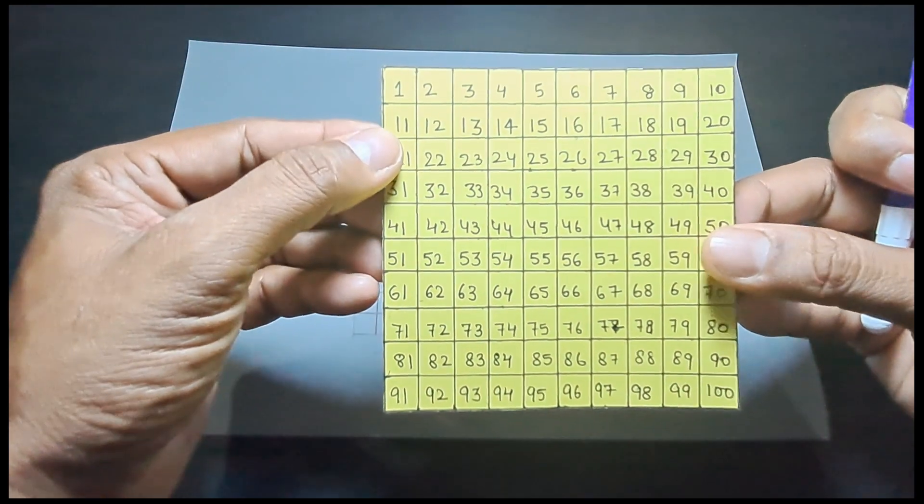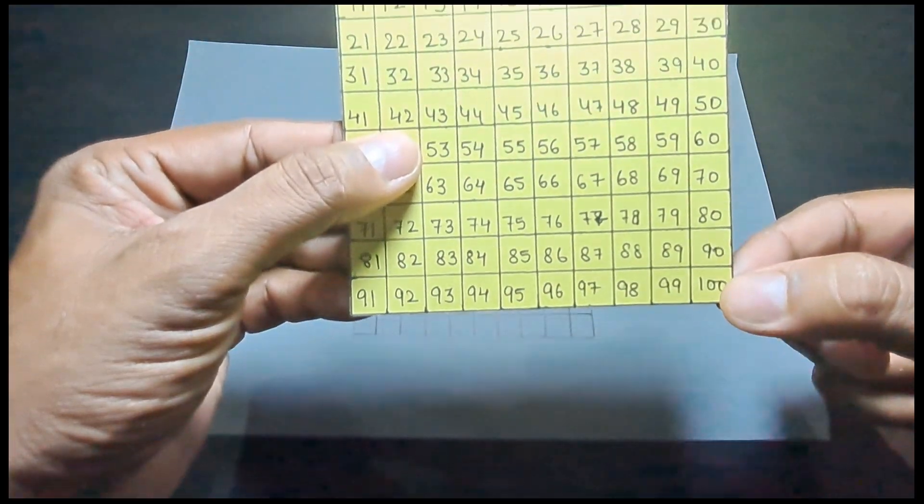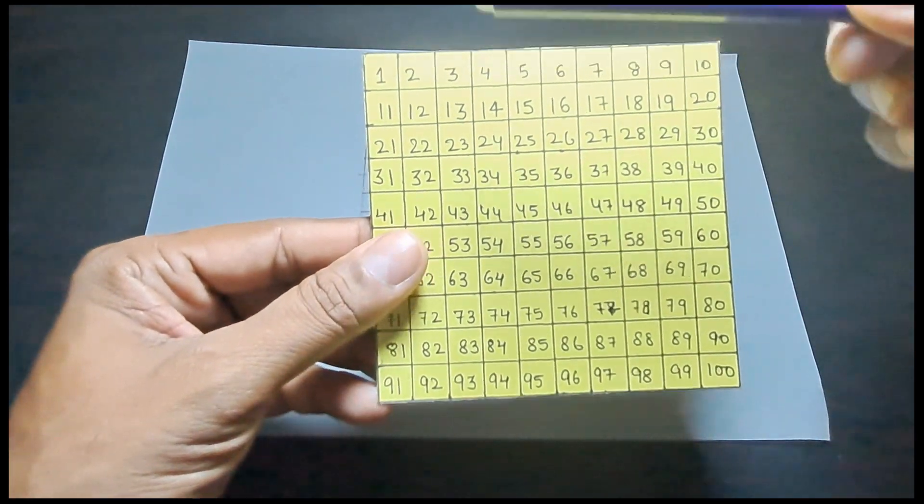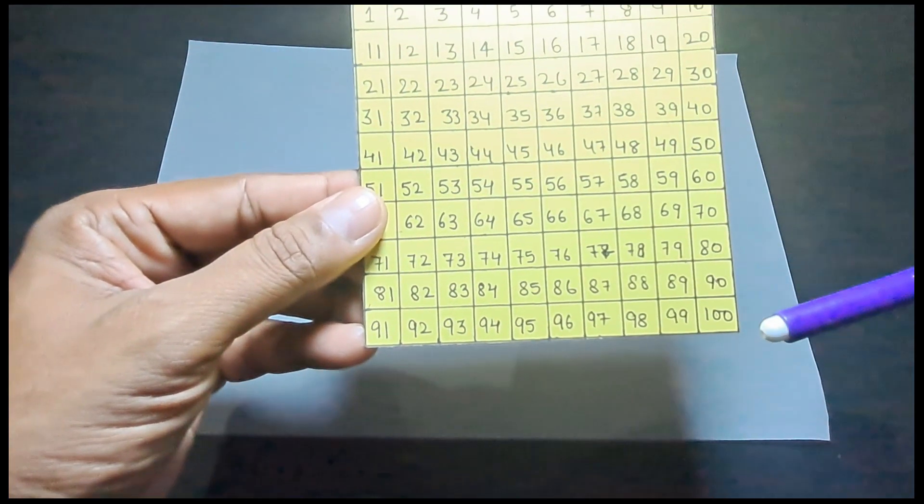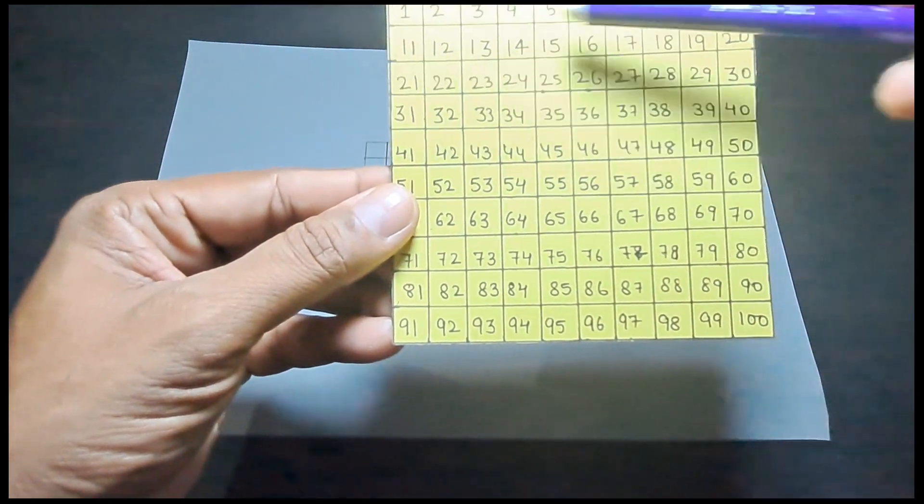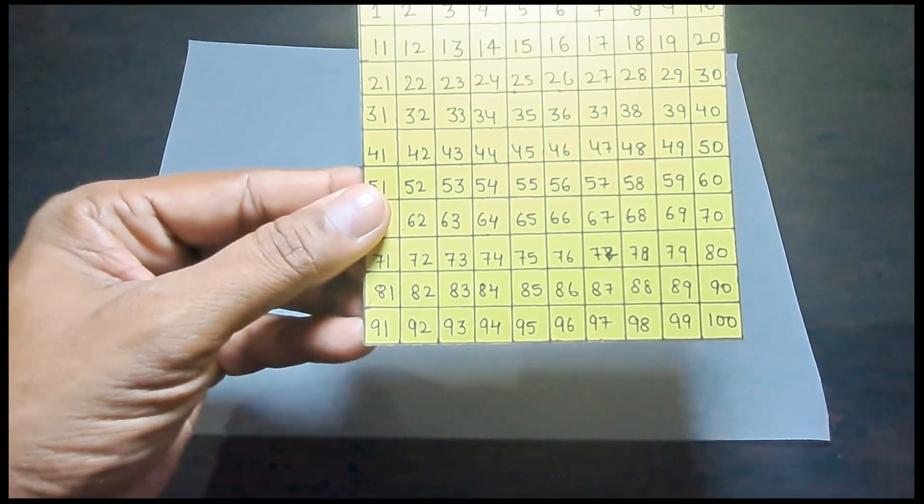Then we have written the numbers starting from 1 and up to 100. So we do not miss out on any number and ensure that you write all numbers from 1 to 100 in rows of 10 each.